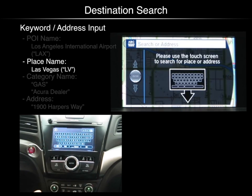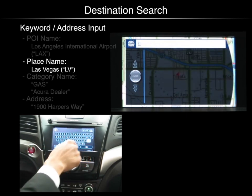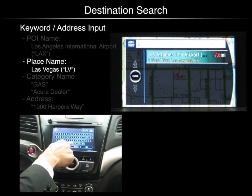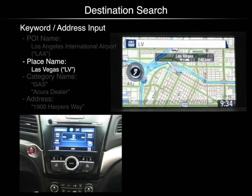You can also search for a destination by place name. Push enter to select keyword address input. Use the keypad to input a place name. When the place name appears on the list, select it by pushing enter.